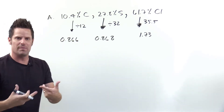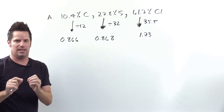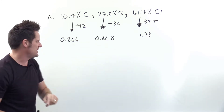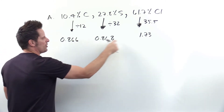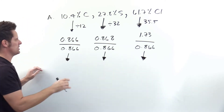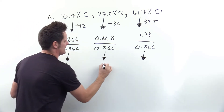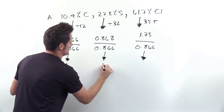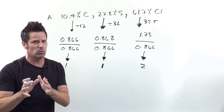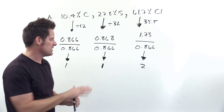Step two: once we have these numbers we find whichever of them is the smallest. Which of these three numbers is the smallest? 0.866, 0.868, or 1.73? It's 0.866. So in step two you divide all three of these by the smallest, which is 0.866, then round to the nearest whole number. 0.866 divided by itself is 1. 0.868 divided by 0.866 is really really close to 1 — it's like 1 and some tiny decimal — so you may as well just call it 1. And 1.73 divided by 0.866 is 2. It's not exactly 2 but it's really really close, so if you're within a couple of hundredths just round to the nearest whole number.